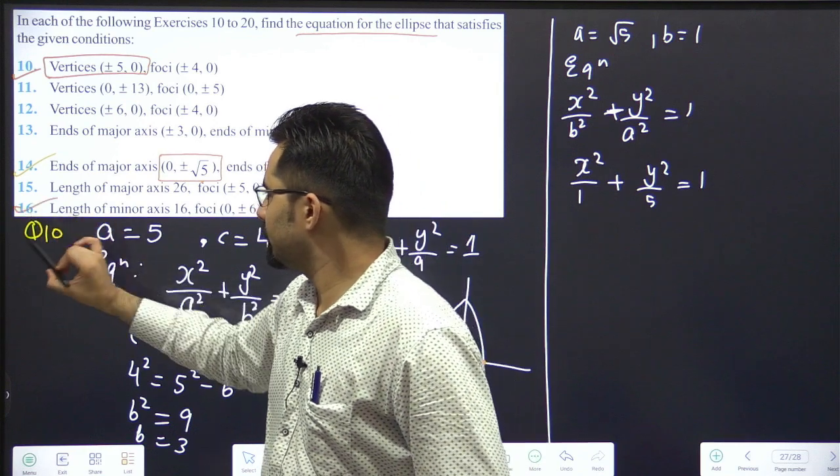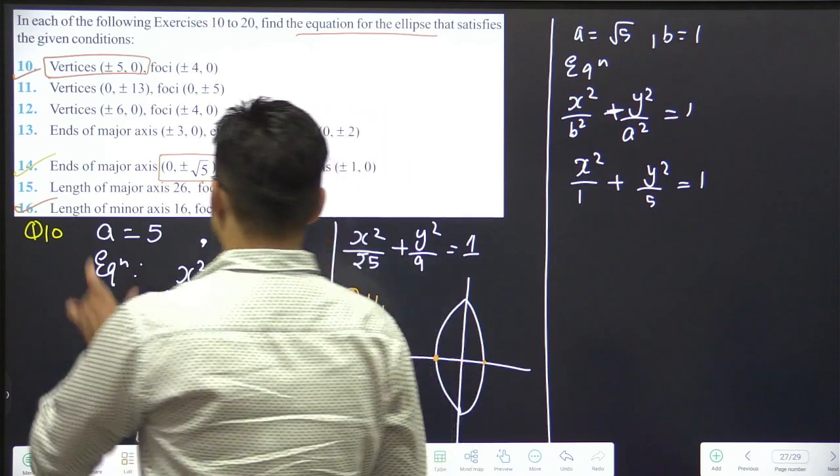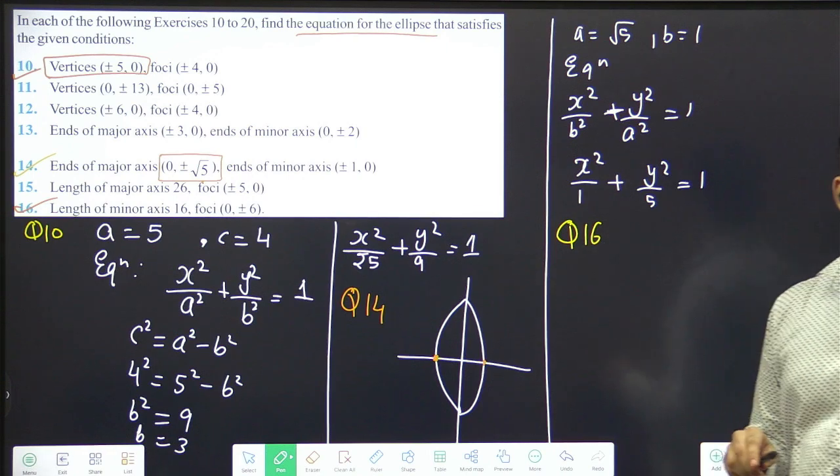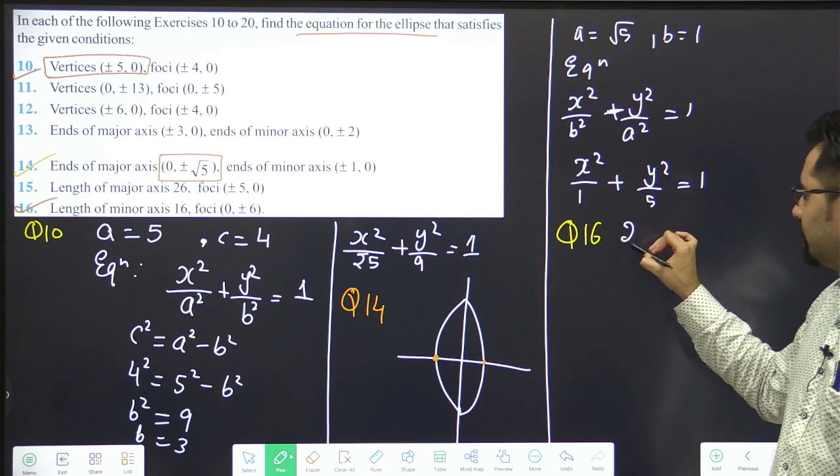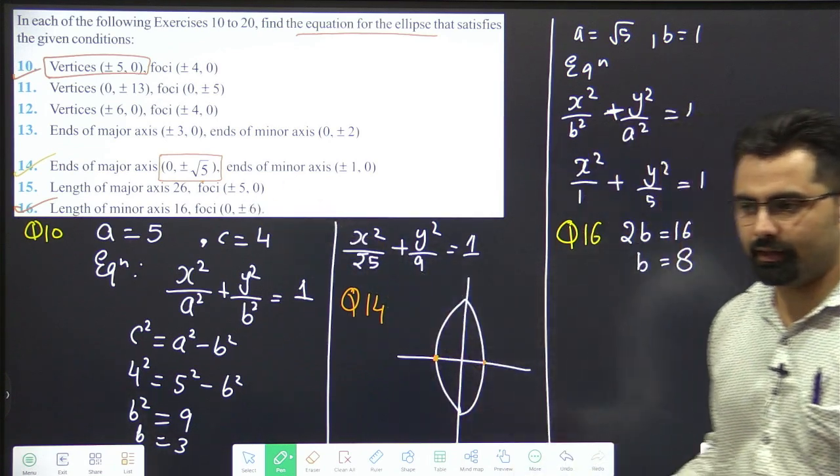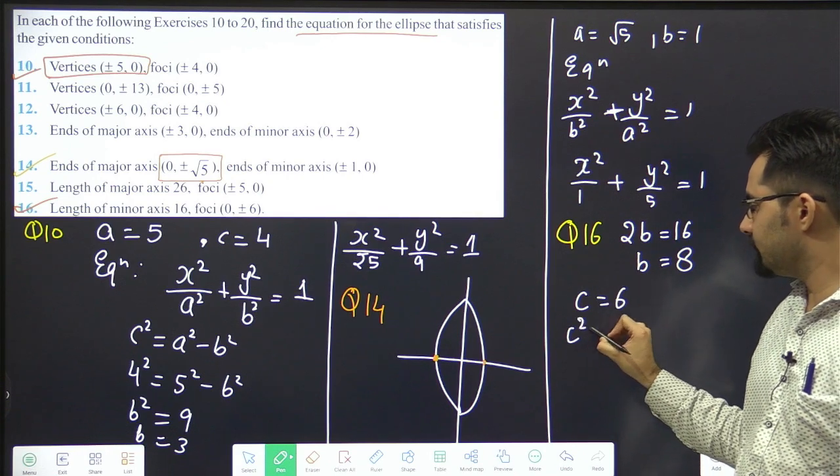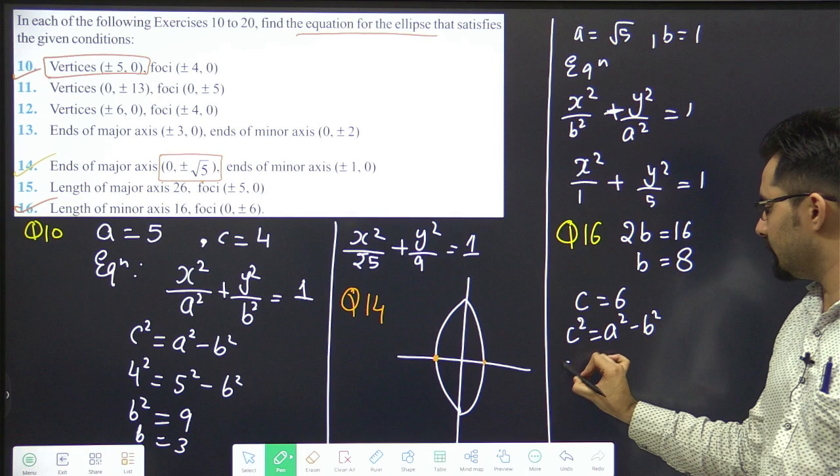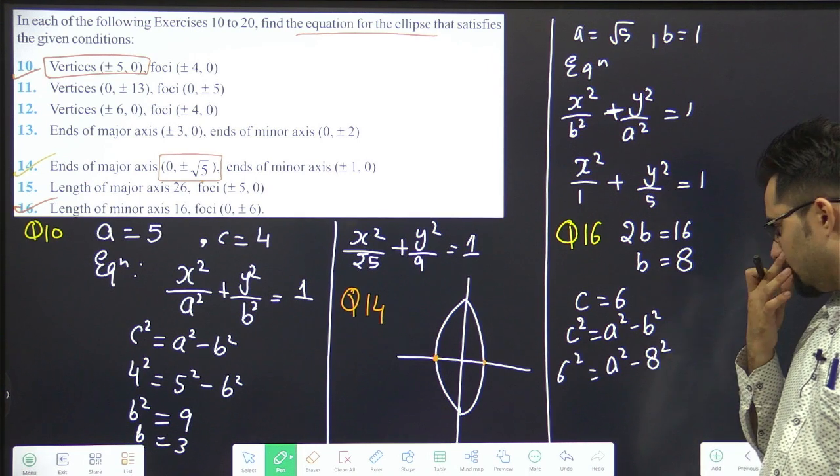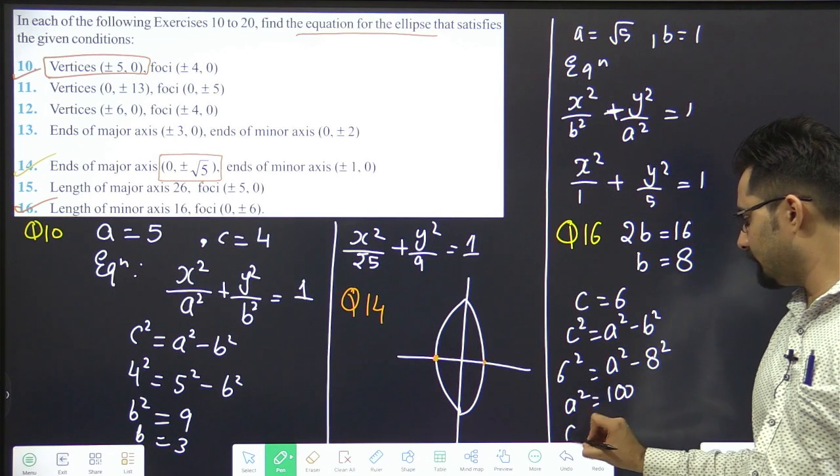Question 16. Again 1 minute you have. Length of minor axis 16. Minor axis length is represented by 2b. 2b equals 16. b is 8. Foci c is 6. Apply formula. c square equals a square minus b square. 6 square equals a square minus 8 square. a square is 100. a is 10.